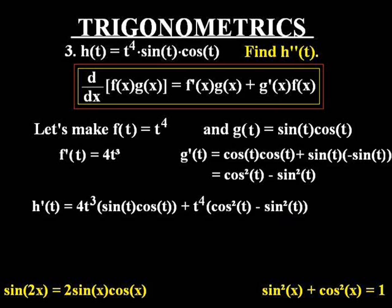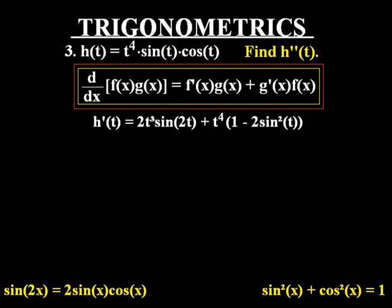Using some of the trigonometric identities I've listed before, we can take the sine of t cos of t portion and reduce it to sine of 2t divided by 2, and we can use the cos squared of t minus sine squared of t and reduce it to 1 minus 2 sine squared of t. So the end result of this is h prime of t is equal to 2t cubed sine 2t plus t to the power 4 multiplied by 1 minus 2 sine squared t. Now that happens to be the first derivative of h.